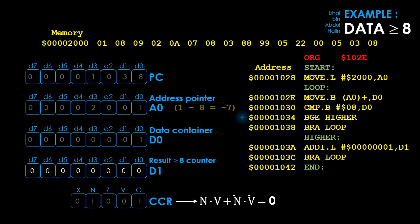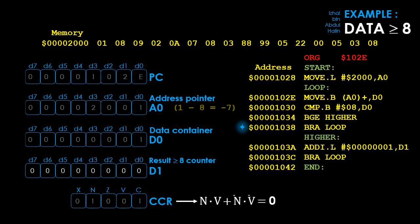Since the condition code result is 0, a branch to label higher is not done. Instead, the next instruction at address 1038 is executed. Before executing the BRA loop instruction at address 1038, the program counter is updated to 103A. The branch always instruction is executed, loading the program counter with loop's value 102E, branching back to loop. Note that the data tested in this cycle was less than 8, so register D1 was not incremented.